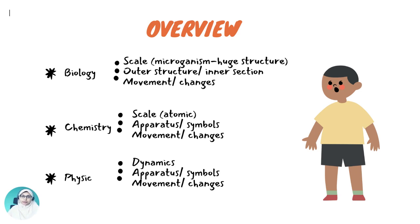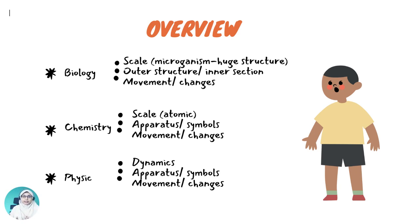In chemistry, the scientific drawing always involves the apparatus setup and symbols. For instance, we use an arrow to represent heat. Similarly, in physics, the drawing could be extended to show the dynamics and movement and even changes.